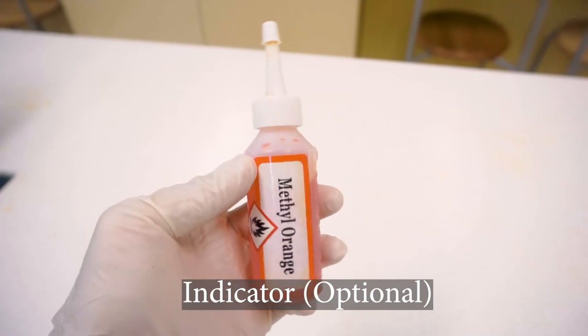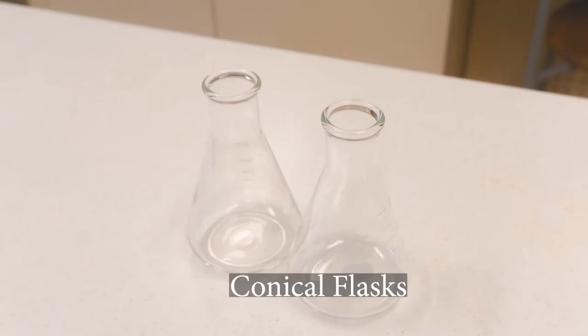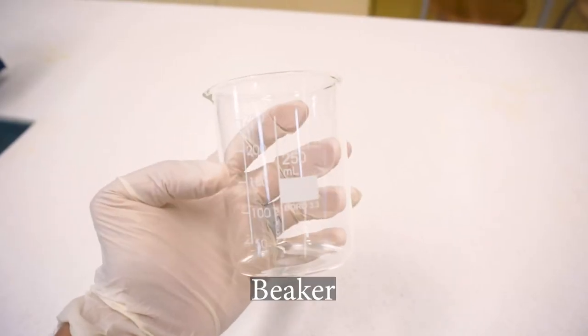Indicator. As for glassware, you will need a conical flask and a glass beaker.